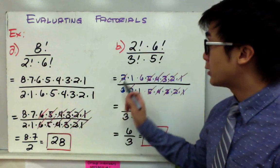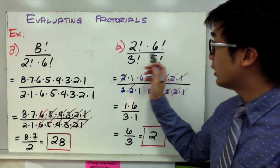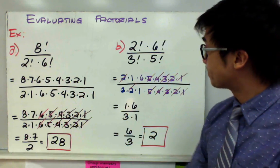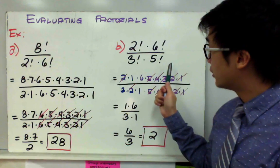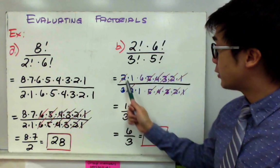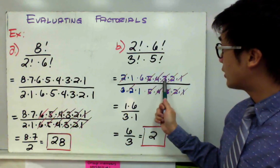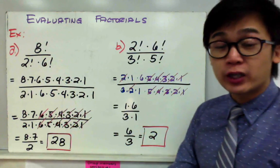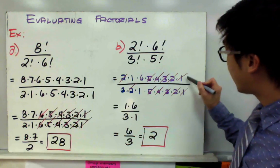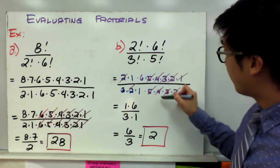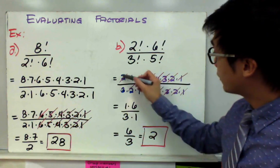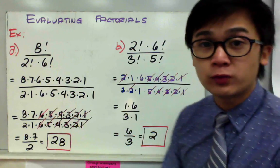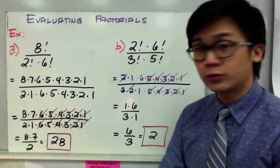For letter B, we evaluate 2 factorial times 6 factorial over 3 factorial times 5 factorial. Expand each: 2 times 1 times 6 times 5 times 4 times 3 times 2 times 1, all over 3 factorial times 5 factorial. Cancel matching terms: 1, 2, 3, 4, 5 cancel, and 2 and 2 cancel. You're left with 1 times 6 over 3 times 1, giving 6 over 3, which equals 2.